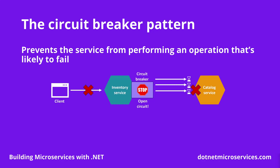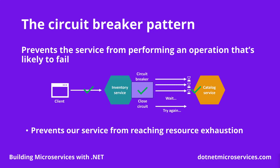After this, requests will just keep failing immediately during the configured wait time, which would hopefully give the dependent service enough time to go back to a healthy state. Eventually, the circuit breaker will let some requests go out to verify if they succeed. And if that is the case, it will close the circuit again, letting all further requests reach the dependent service. That's how the circuit breaker prevents our service from reaching resource exhaustion, while at the same time avoiding overwhelming dependent services until they get a chance to recover.